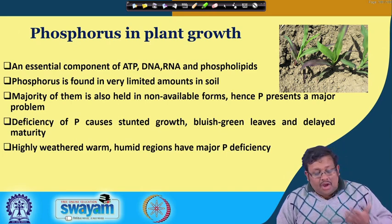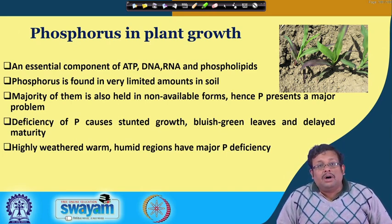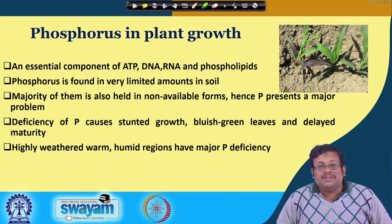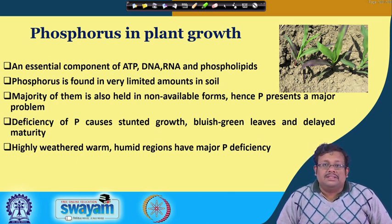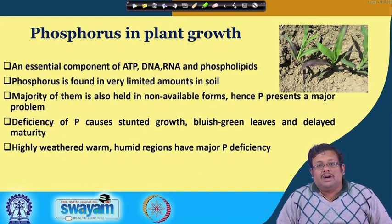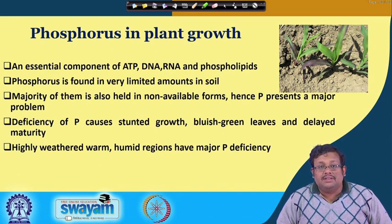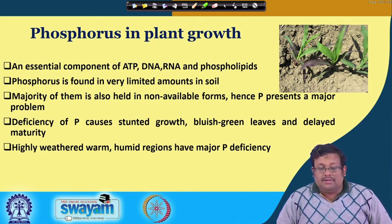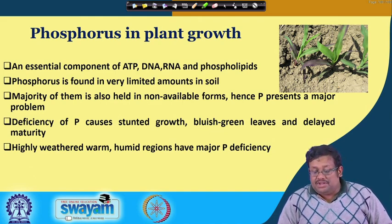Highly weathered, warm, and humid regions are major phosphorus-deficient areas because there is a high amount of aluminium and iron-bearing minerals. This aluminium and iron basically fix the phosphorus under these conditions, creating phosphorus deficiency.